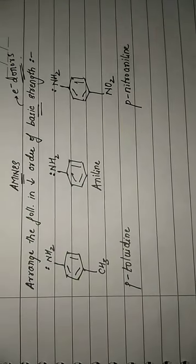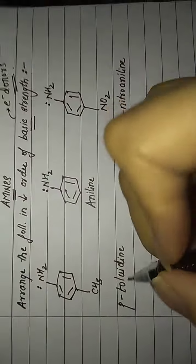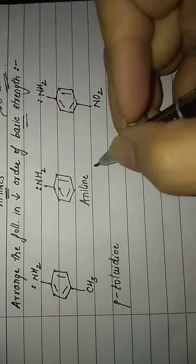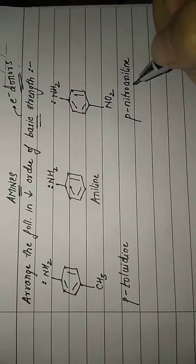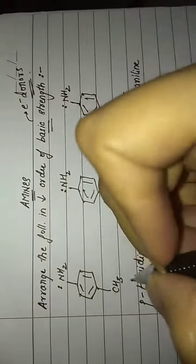Now we have three molecules over here: paratoluidine, aniline, and paranitroaniline. Let us check in this molecule whether this lone pair of electrons is easily available for donation or not.